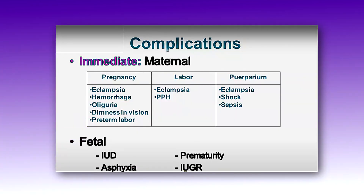Here we discuss the complications of preeclampsia. There are maternal complications and fetal complications. Immediate maternal complications during pregnancy include: eclampsia, hemorrhage, oliguria, diminished vision, and preterm labor. During labor: eclampsia and postpartum hemorrhage. During the puerperium: eclampsia, shock, and sepsis. Fetal complications include: intrauterine death, asphyxia, prematurity, and intrauterine growth restriction.